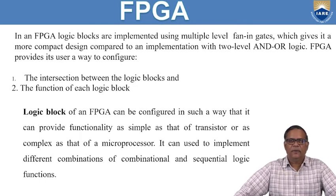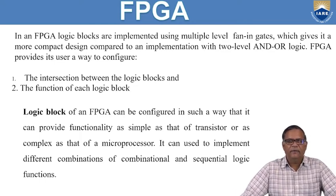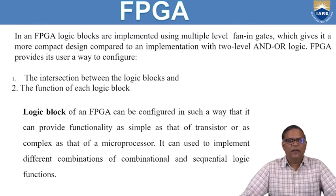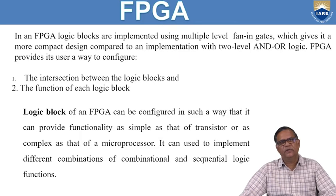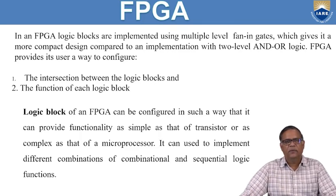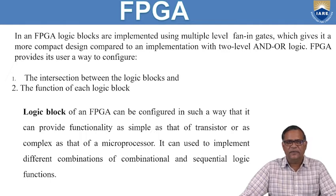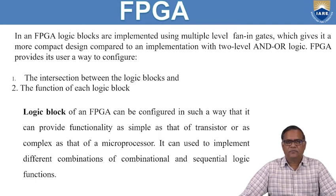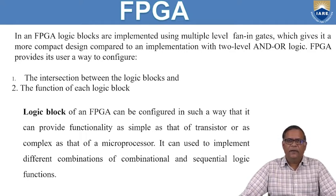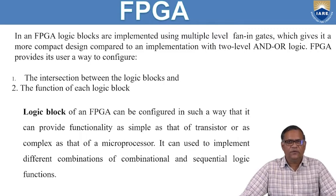In FPGA, the blocks are implemented using multi-level fan gates, giving a more compact design compared to the two-level AND-OR gate structures in PLAs. There are three types of PLAs: PROM, PAL, and PLA. In PROM, the AND array plane is fixed but the OR array plane is programmable. In PAL, the AND plane is programmable but the OR plane is fixed. Whereas in PLA, both the AND plane and OR plane are programmable. FPGA allows the user to configure the intersection between the logic blocks and the function of each logic block.